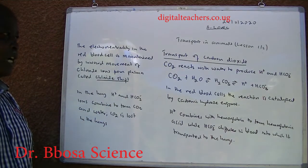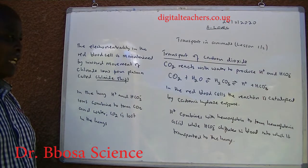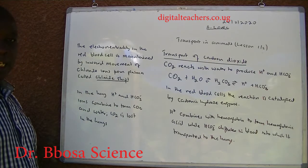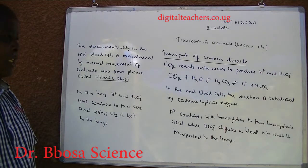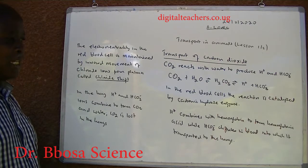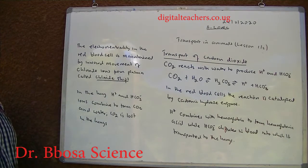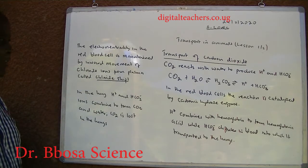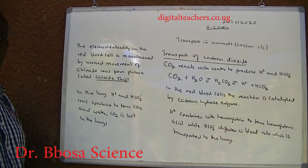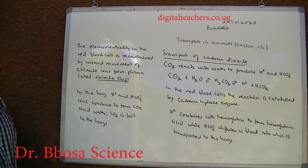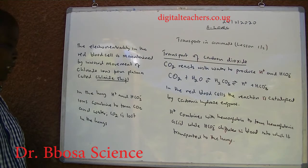The transport of carbon dioxide: carbon dioxide reacts with water to produce hydrogen ions and bicarbonate ions. In the red blood cells, the reaction is catalyzed by carbonic anhydrase enzyme. Hydrogen ions combine with hemoglobin to form hemoglobinic acid, while bicarbonate ions diffuse into blood plasma where it is transported to the lungs. The electrical neutrality in the red blood cells is maintained by inward movement of chloride ions from the plasma — the so-called chloride shift. In the lungs, hydrogen ions and bicarbonate ions combine to form carbon dioxide and water, and carbon dioxide is lost.